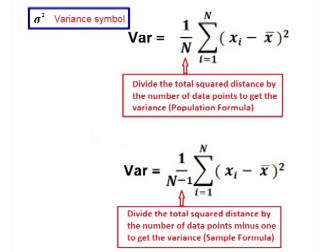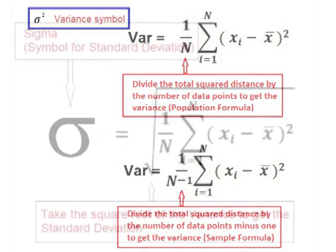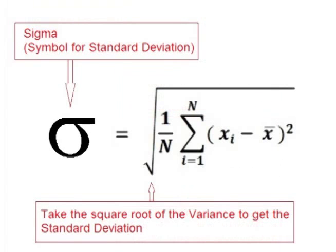If we are using a sample instead of an entire data population, then instead of dividing by n like we did for a population, we divide by n minus one. To get the standard deviation, we simply take the square root of the variance.